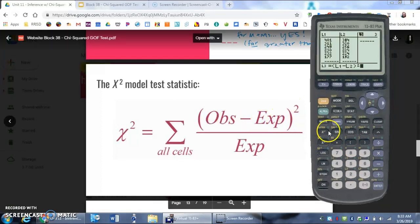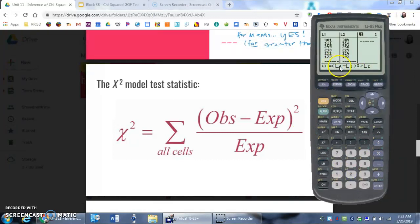Divided by, and then expected again. So I'm going to do second two. So it's going to take the observed value, subtract the expected value, square that difference, and then divide by expected.